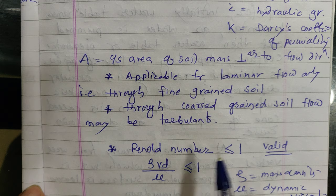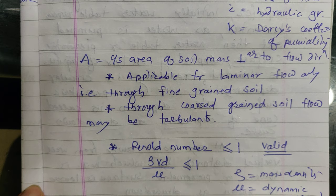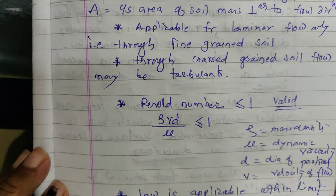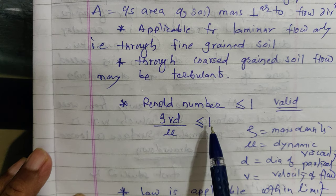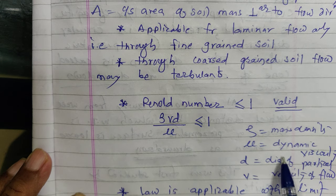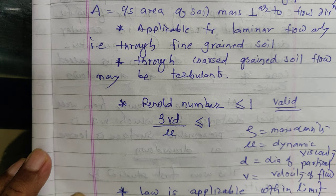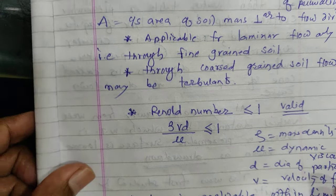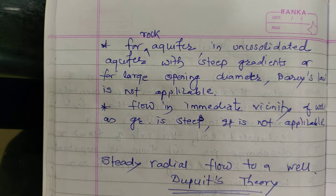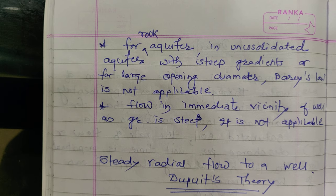Laminar flow occurs when the aquifer is of fine-grained soil. If it is coarse-grained soil, the flow may be turbulent and Darcy's equation is not valid. Darcy's law is valid when the Reynolds number ρvd/μ is less than or equal to 1, where ρ is mass density, μ is dynamic viscosity, v is velocity of flow, and d is diameter. For rock aquifers, unconsolidated aquifers with steep gradients, or large opening diameters, Darcy's law is not applicable.